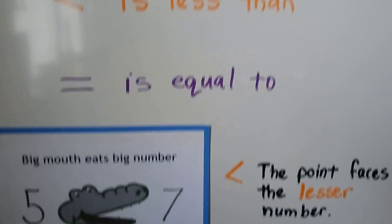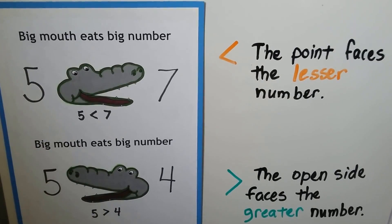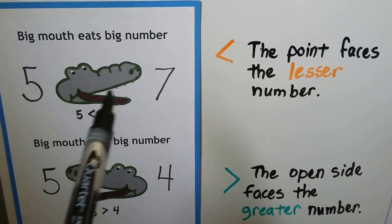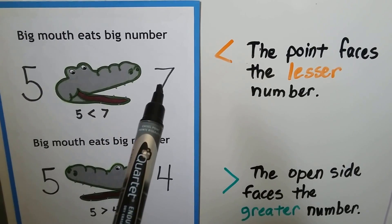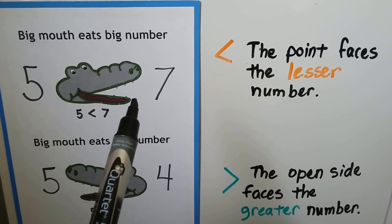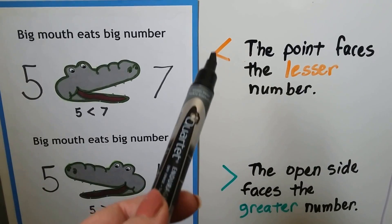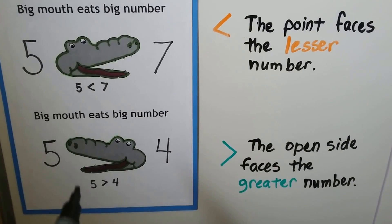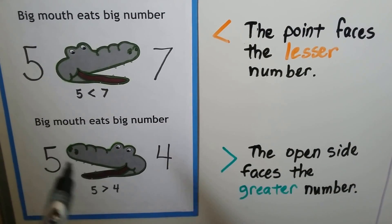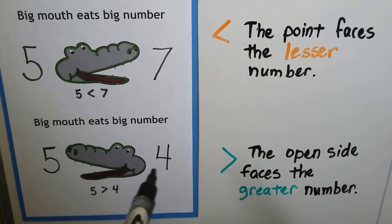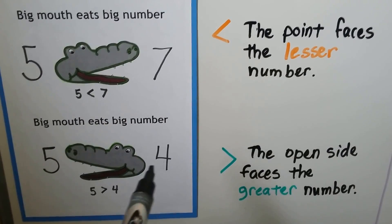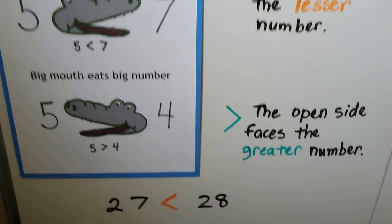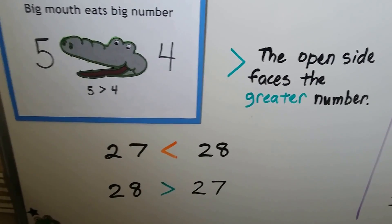You can also look at it as the big mouth eats the big number. Wherever the mouth is open is towards the bigger number. The tip — this little sharp point, the back of his head — faces the smaller number. The open side faces the larger number. Here's the smaller number, and it's like the back of his head, the tip of the symbol.